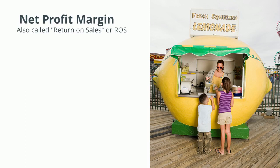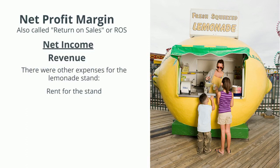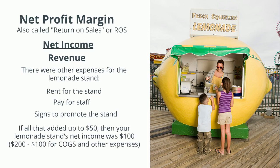We had to pay for more than just lemons and sugar, so we should calculate our net profit margin — also called return on sales or ROS — measured as net income over revenue. There were other expenses like rent for the stand, pay for staff, and signs to promote the stand. If those add up to $50, net income was $100, and net margin is $100 over $200, which equals 50%.